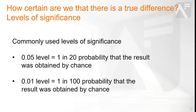Obviously, a 0.01 level of significance is more reliable than a 0.05 level. In reality, analysts often take many factors into consideration and adjust these levels to compensate for other uncertainties in the data.